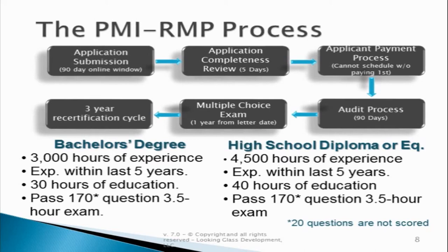Once you submit your experience verification form, you must sit for an exam that's 170 questions and takes three and a half hours. Should you not have a bachelor's degree, you are still eligible to sit for the exam. However, if you only have a high school diploma or equivalent, you must have 4,500 hours of experience within the last five years working on projects and 40 hours of education in risk management. You must then pass the same exam before carrying the RMP designation.